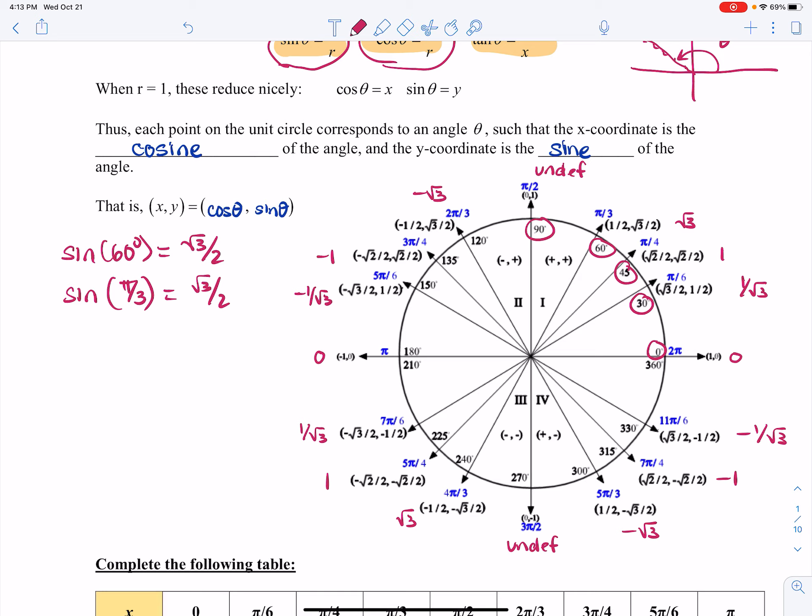So in blue, you see the angle in radians. The coordinates we already know are the cosine and sine of the corresponding angle. So this is telling me that cosine of pi over 3 is a half, and the sine of pi over 3 is root 3 over 2, just as an example.